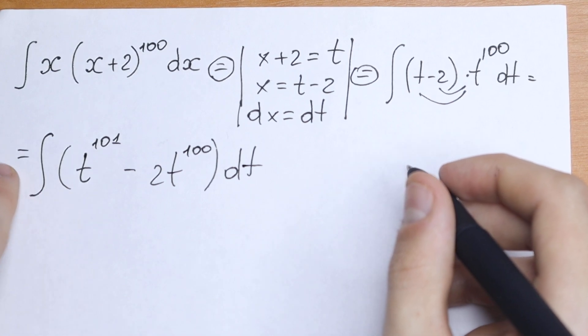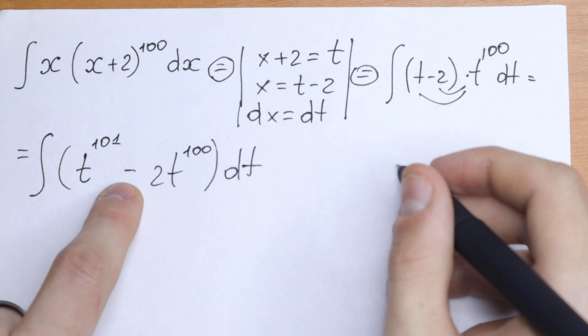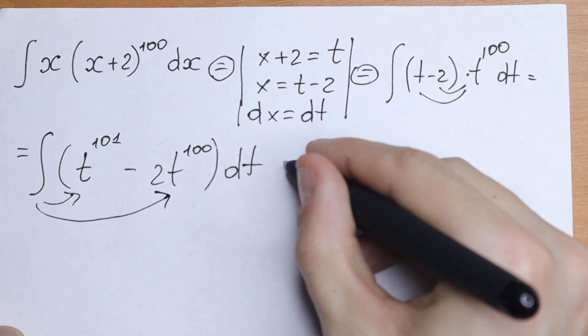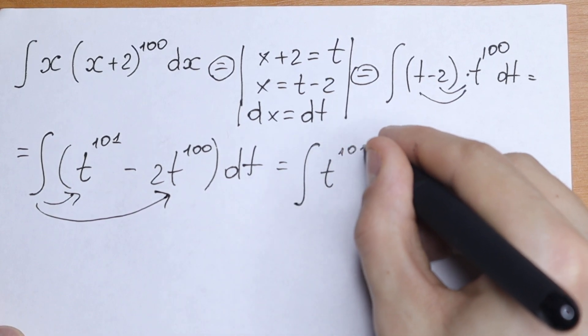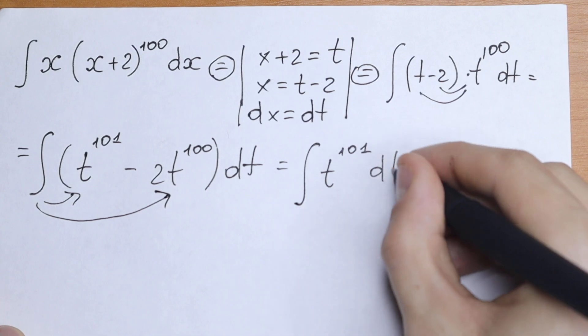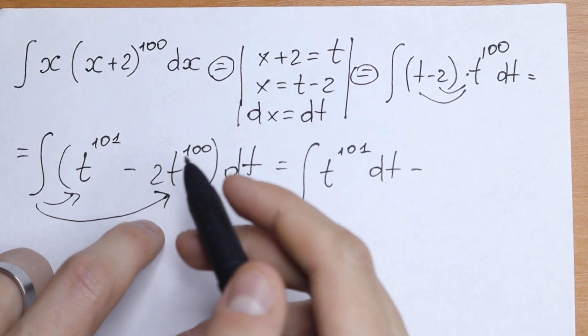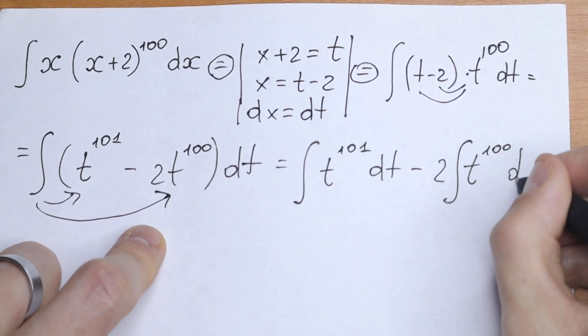We have an integral of subtraction. So we can take integral of this element and minus integral of this element. So let's write this. We will have integral of t to the power 101 dt, and minus... I bring these 2 in front of this integral because this is a constant. Minus 2 integral t to the power 100 dt.